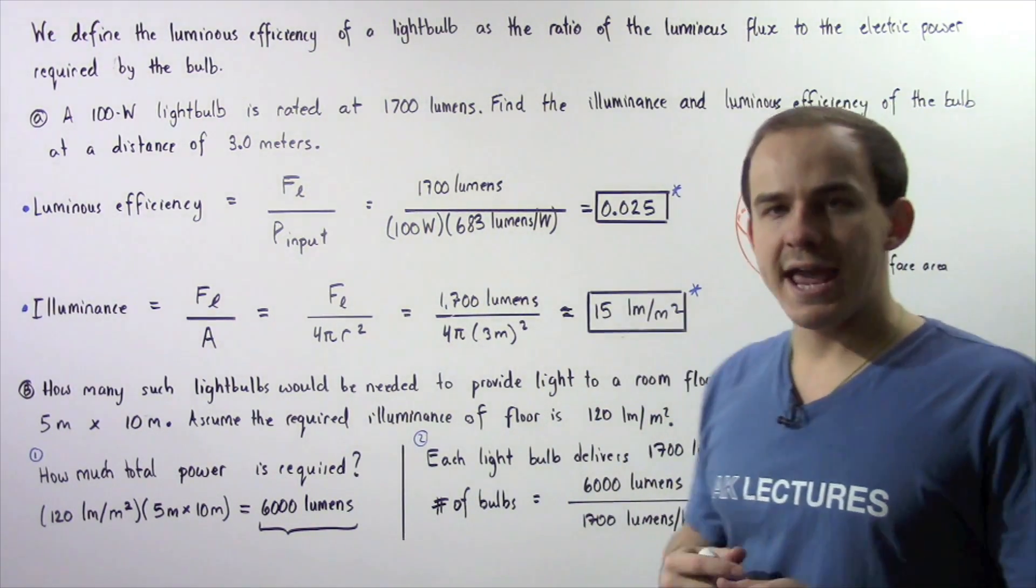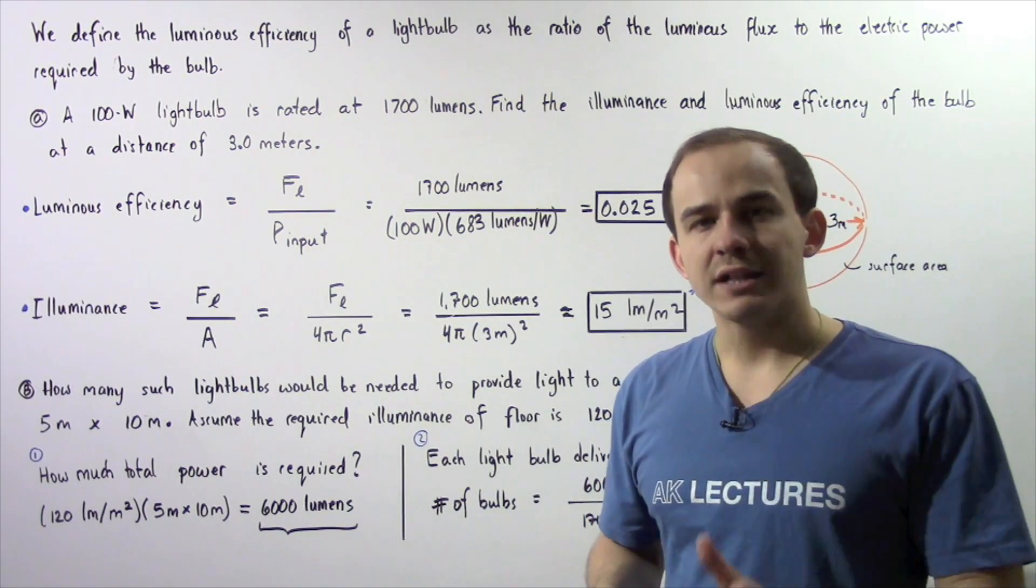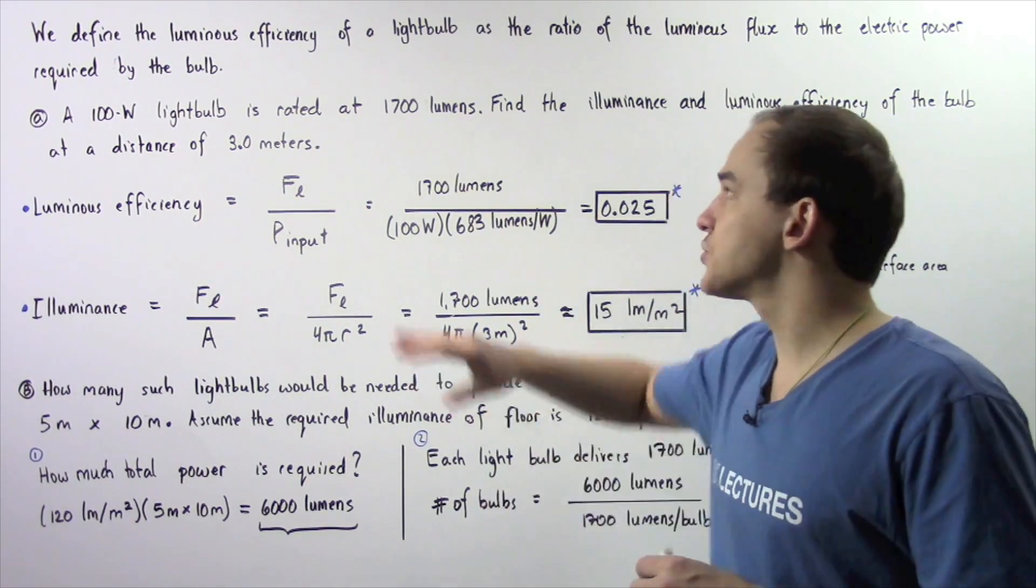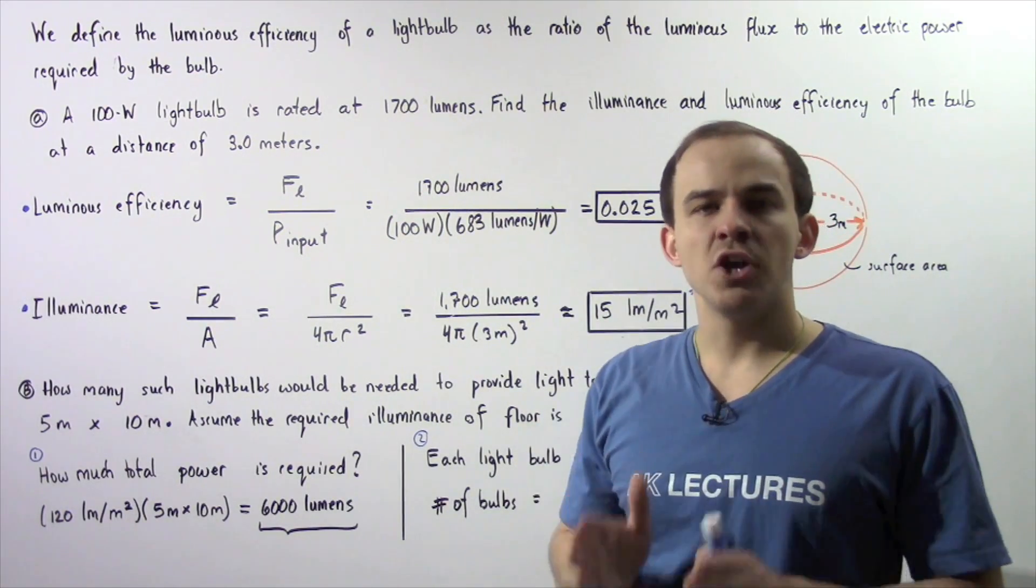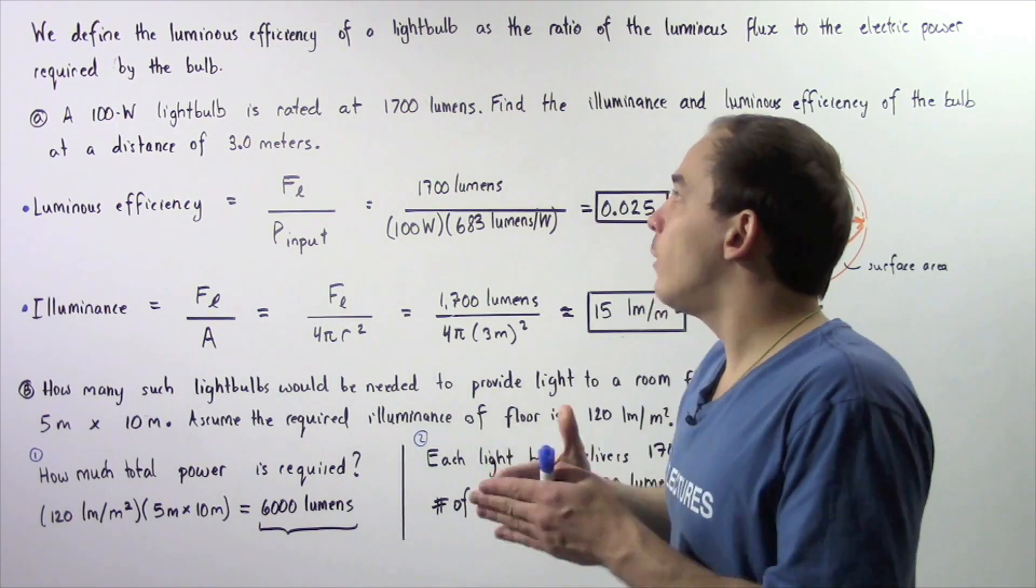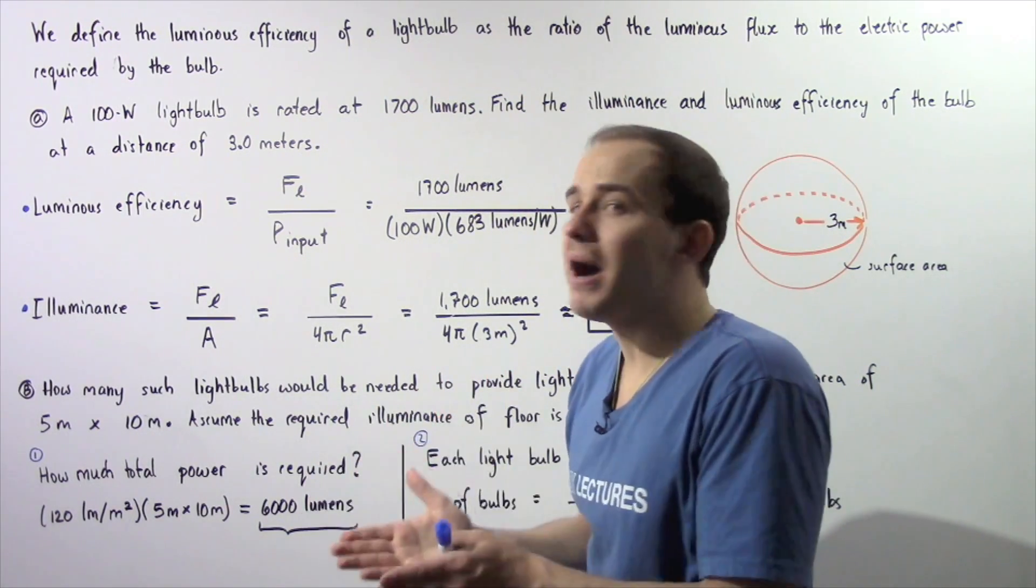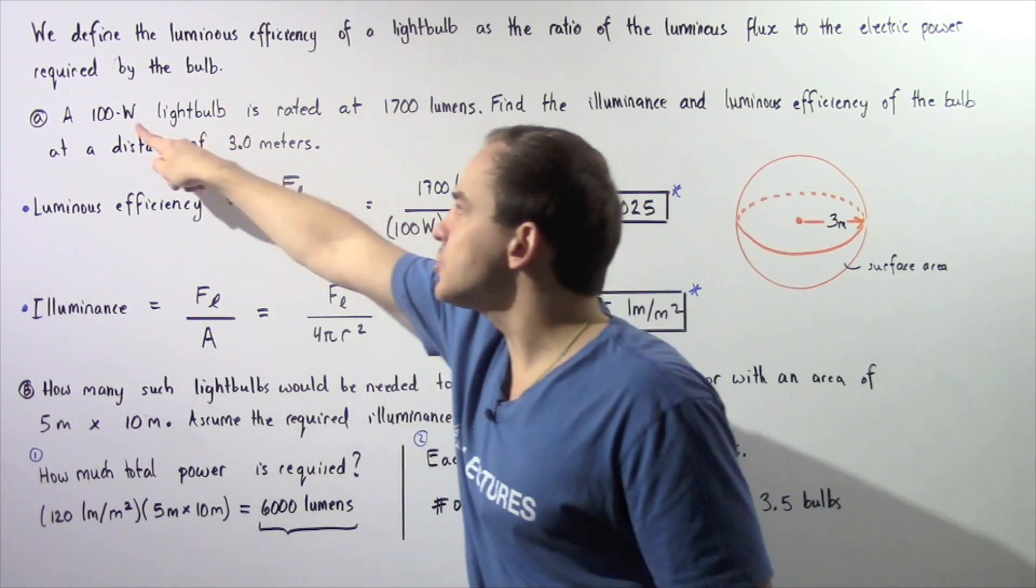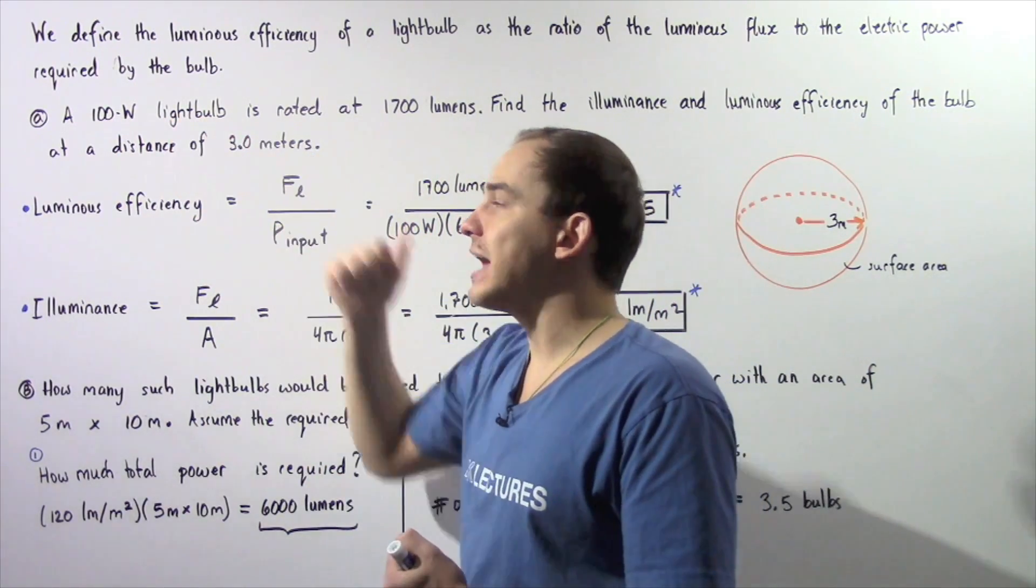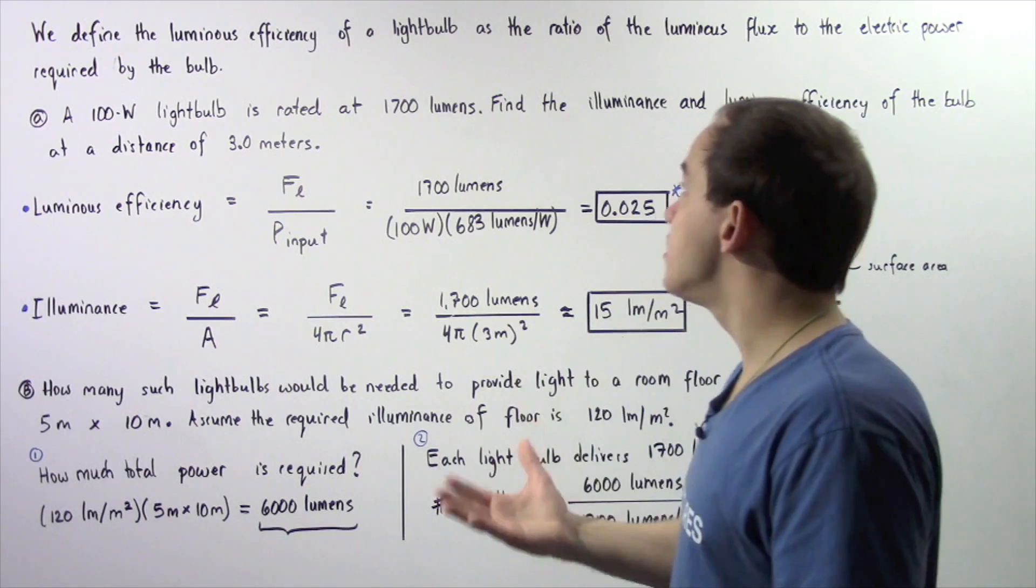Now let's begin with part A. A 100 watt light bulb is rated with a luminous flux of 1700 lumens. This quantity represents how much power is delivered by the light, and this quantity is how much power is required by that light bulb to power that light.